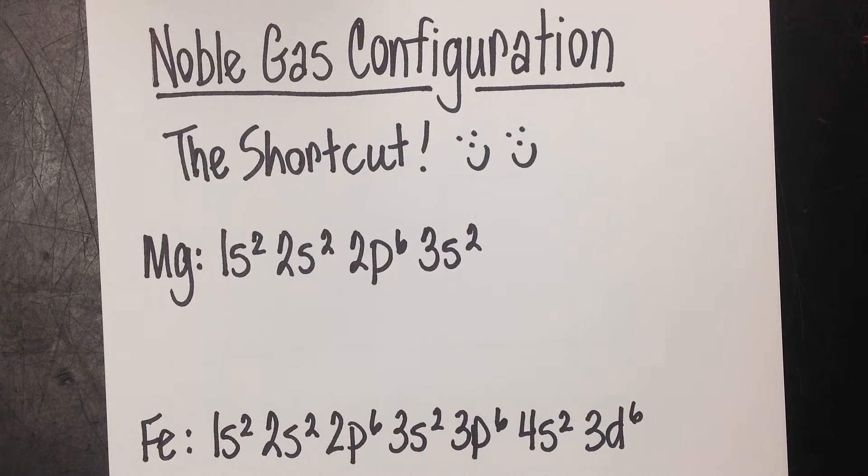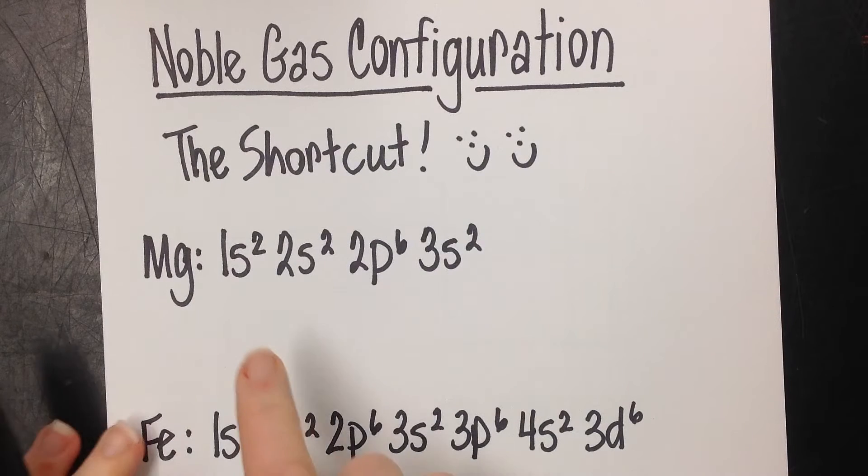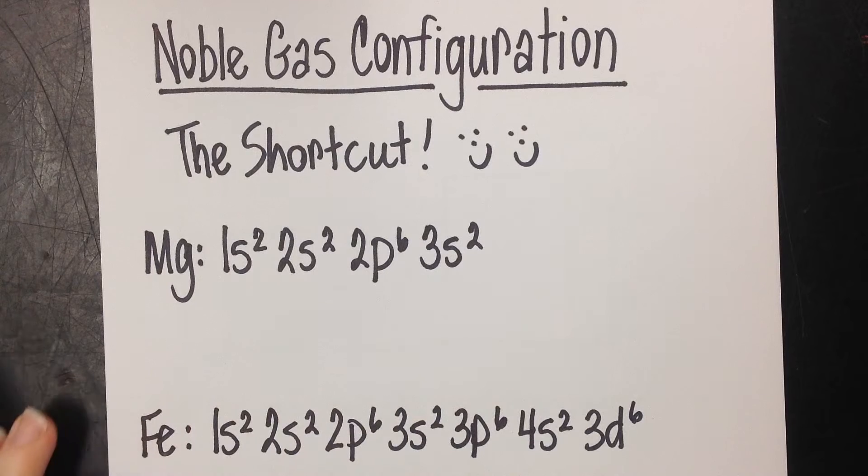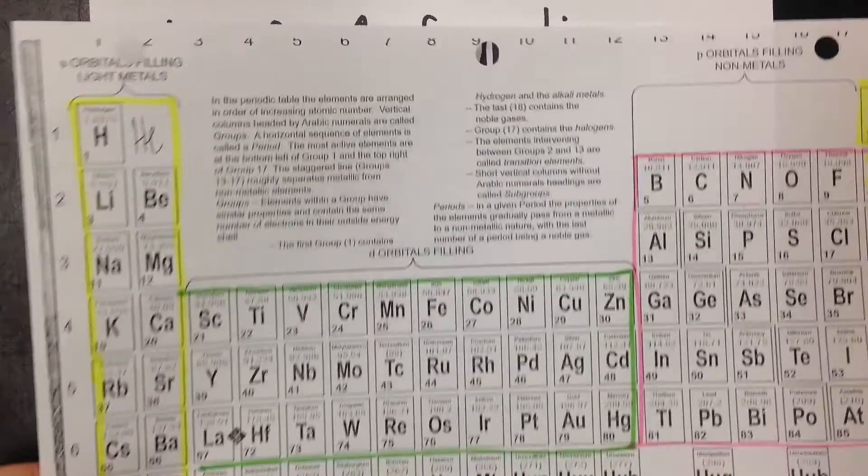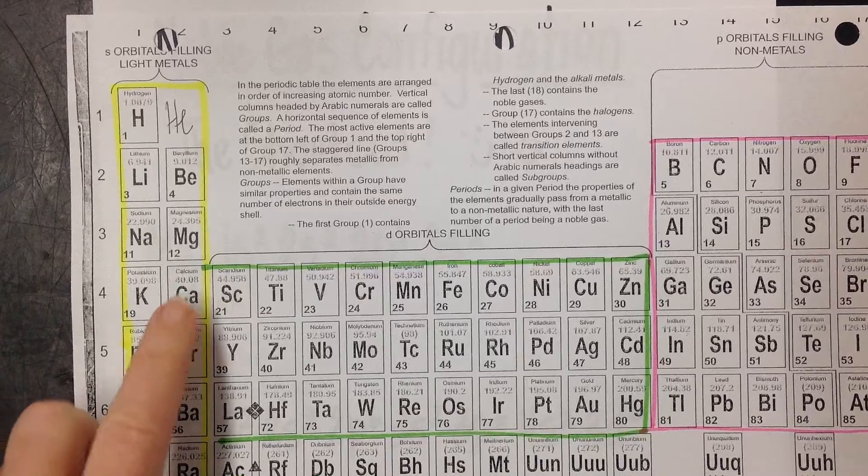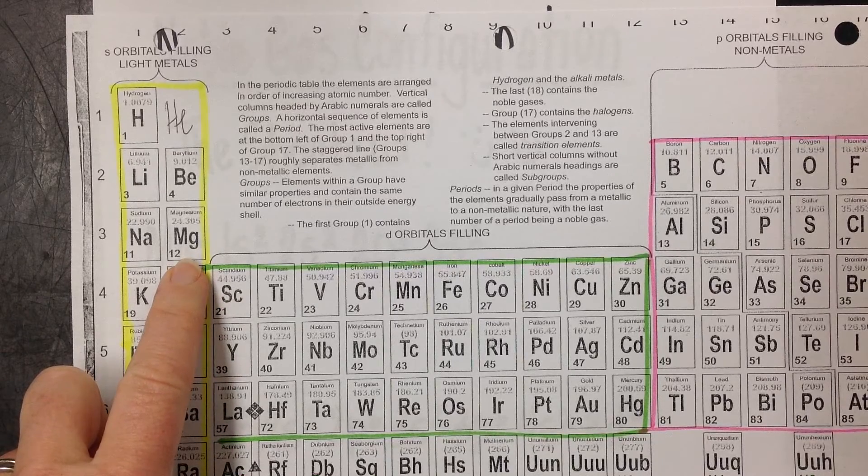Let's look at the first one. The electron configuration for magnesium is 1s2, 2s2, 2p6, 3s2. Not really that bad, but let's say we want to use the shortcut. What you do is you find magnesium on your periodic table. We're right here. And you go backwards.